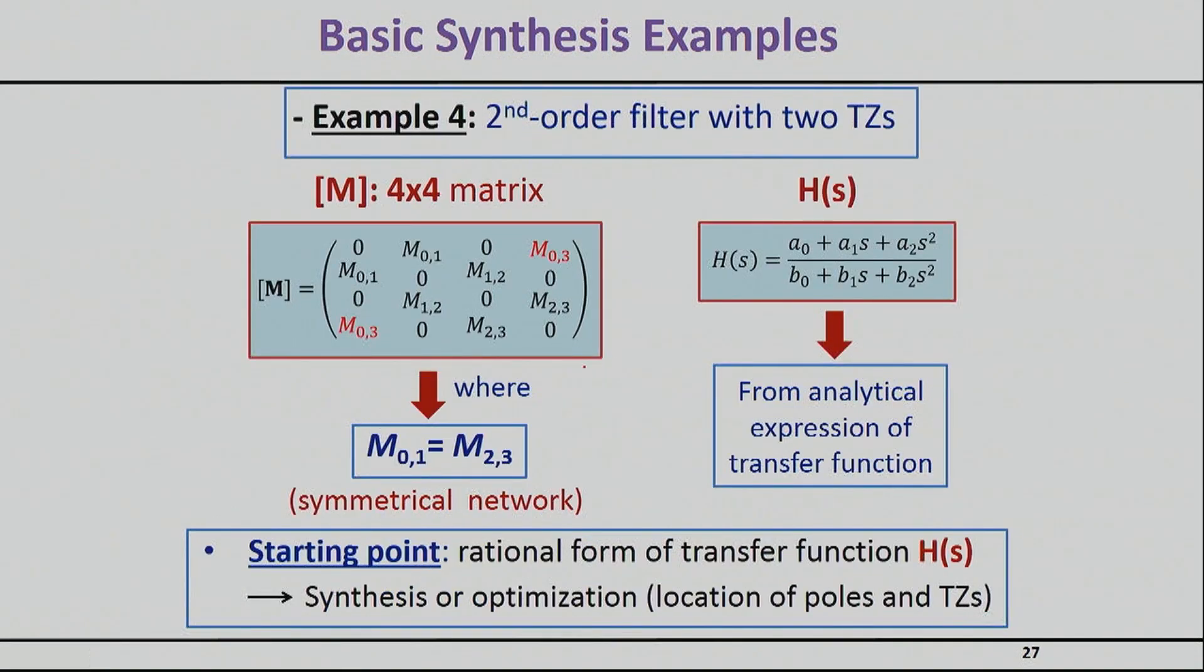When you basically try to synthesize the second order filter, as we have seen from simpler examples, I'm still dealing with a 4 by 4 coupling matrix, and the big difference between what we saw before and this one is this M03 that is basically non-zero, that represents a direct coupling between the source to the load.